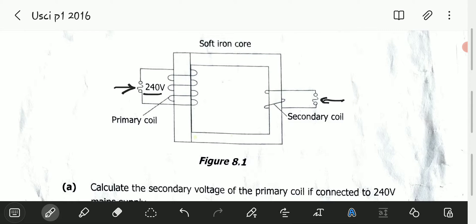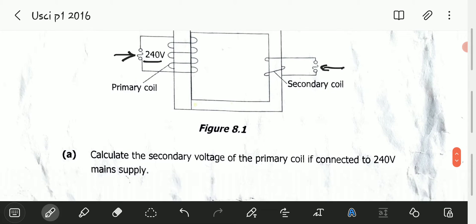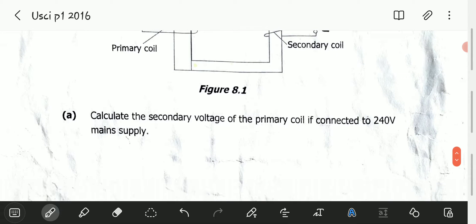Question 8a: Calculate the secondary voltage if the primary coil is connected to 240 volts main supply.